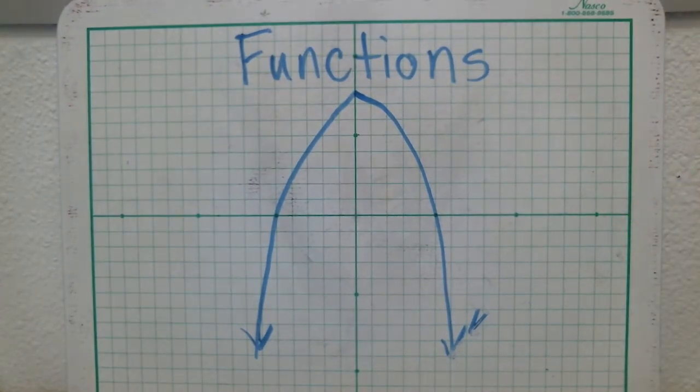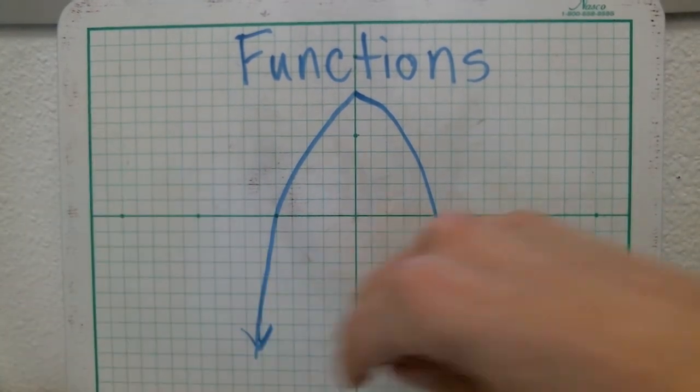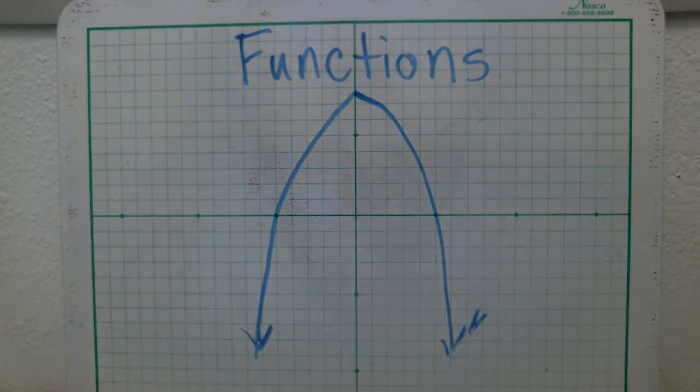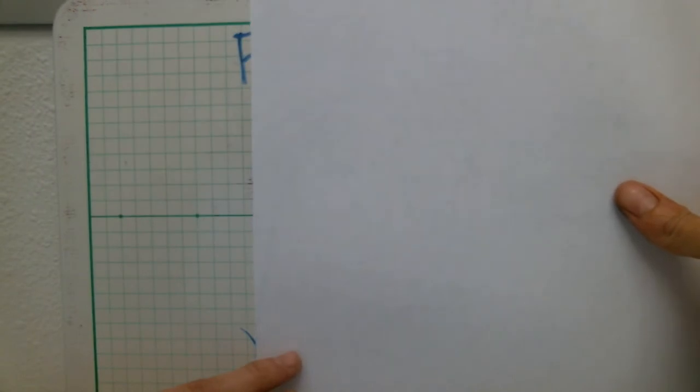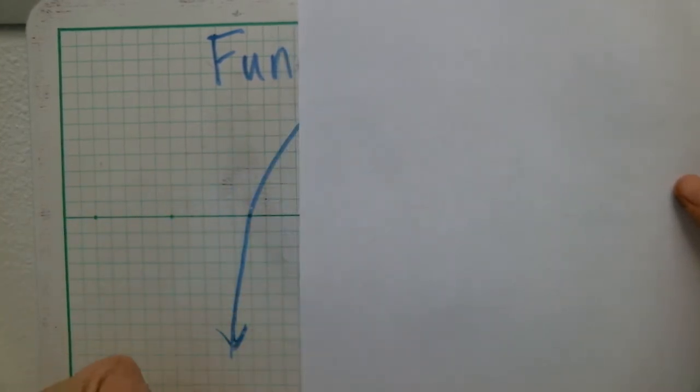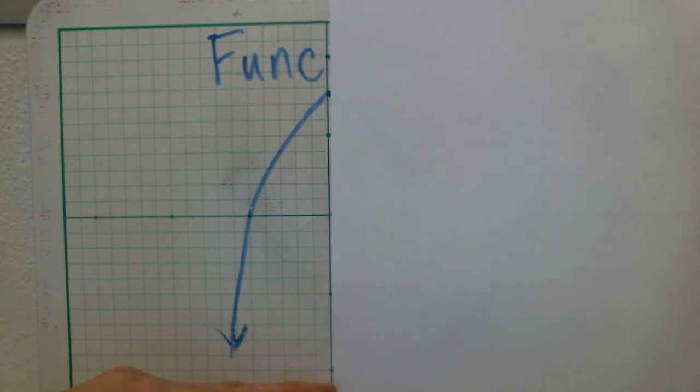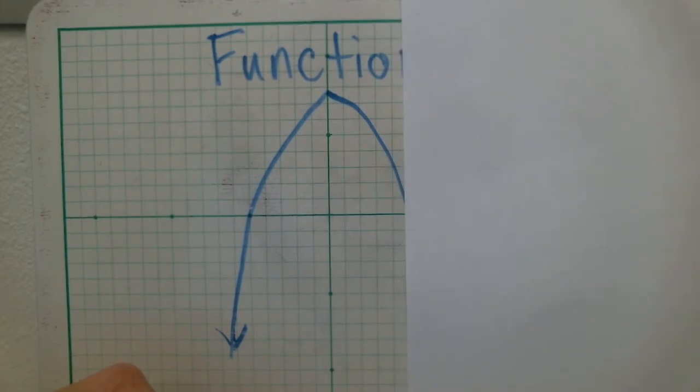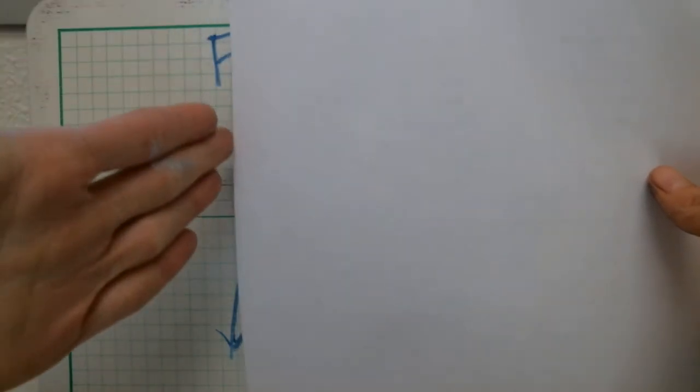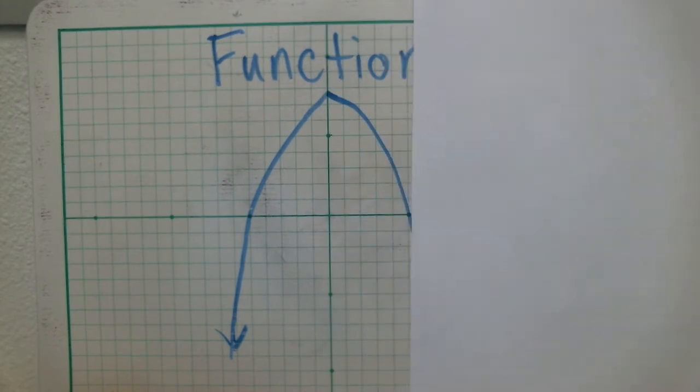From this graph, any x points that we take, there's exactly one y value, and that would continue to infinity going on forever. My paper is touching the line in exactly one point as I move it along here. So as I'm moving along the x-axis, the paper is touching the graph in one point.